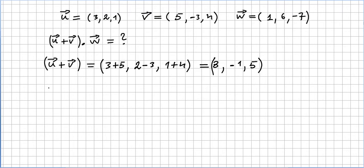So now we have to do this: we are going to take (8, -1, 5) and do the dot product with w. w is (1, 6, -7), so we will have 8 times 1 plus (-1) times 6 plus 5 times (-7).